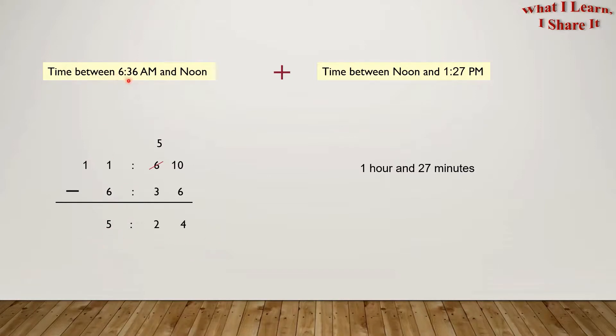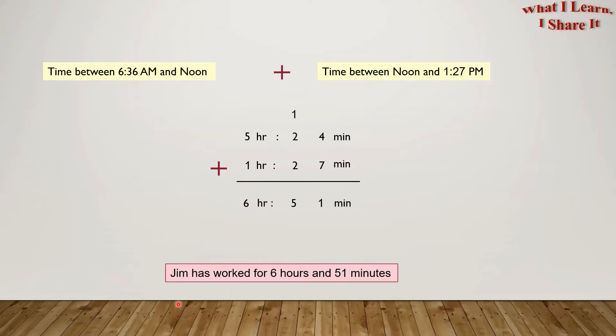So we've got the time between 6:36 a.m. and noon, and we've got the time between noon and 1:27 p.m. So all we have to do is add these two times. So 5 hours and 24 minutes plus 1 hour and 27 minutes is 4 plus 7 is 11, carry the 1, 2 plus 1 is 3, plus 2 is 5. And 5 hours plus 1 hour is 6 hours. So Jim has worked for 6 hours and 51 minutes. We solved the problem!